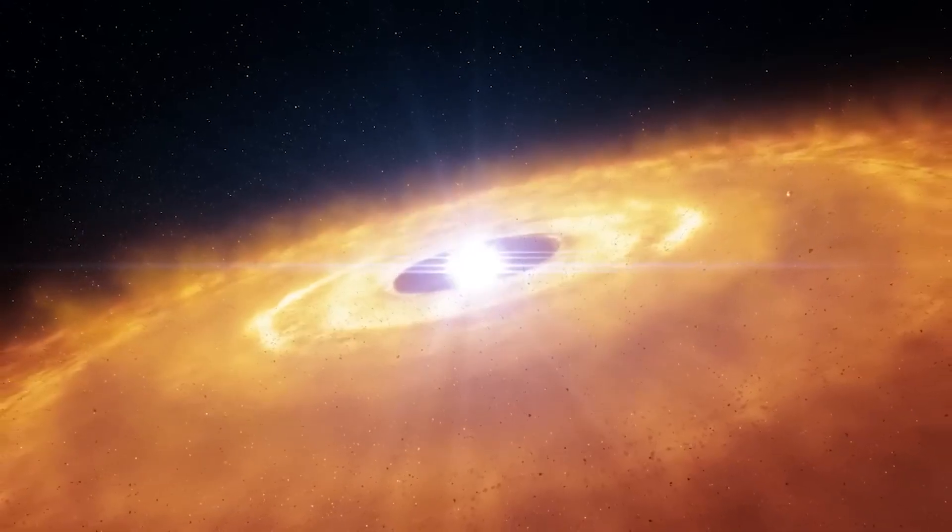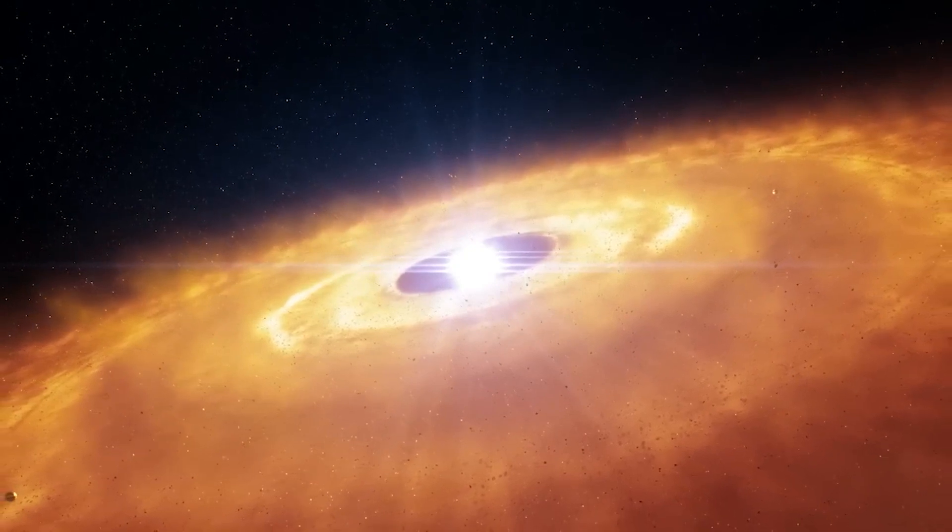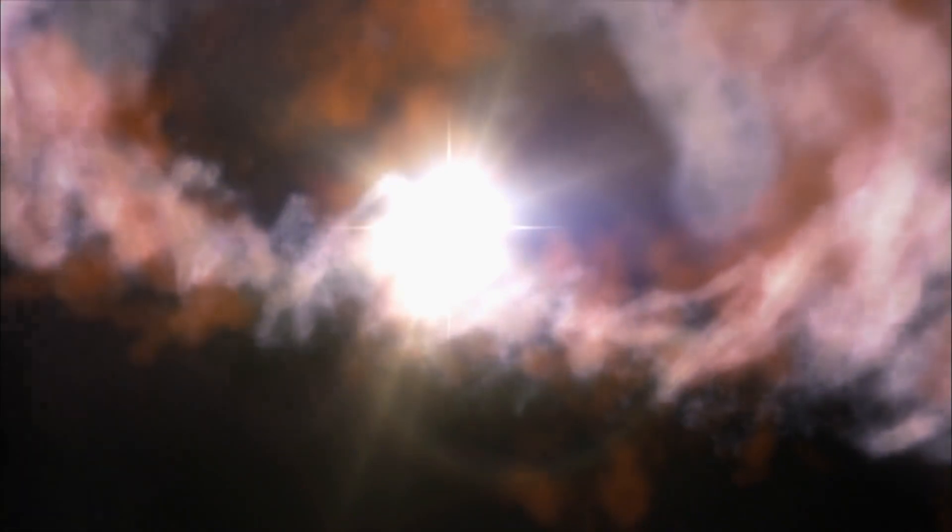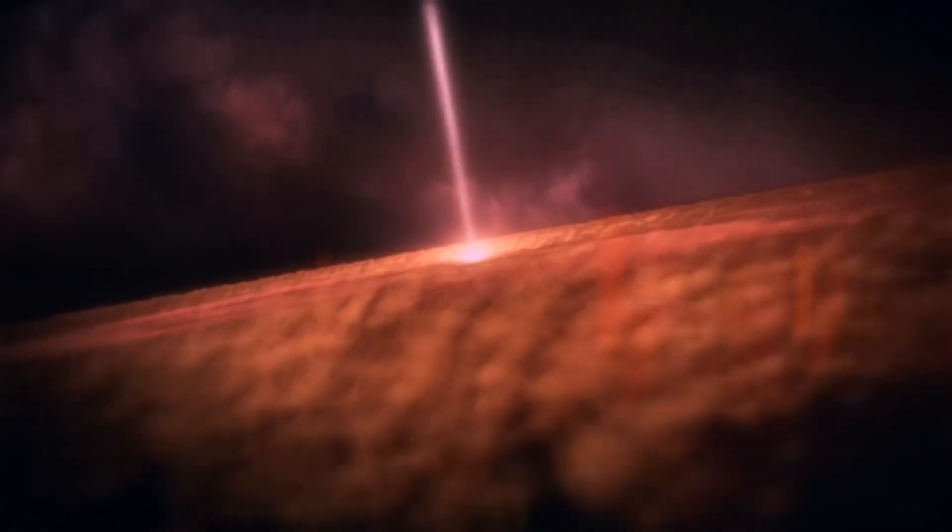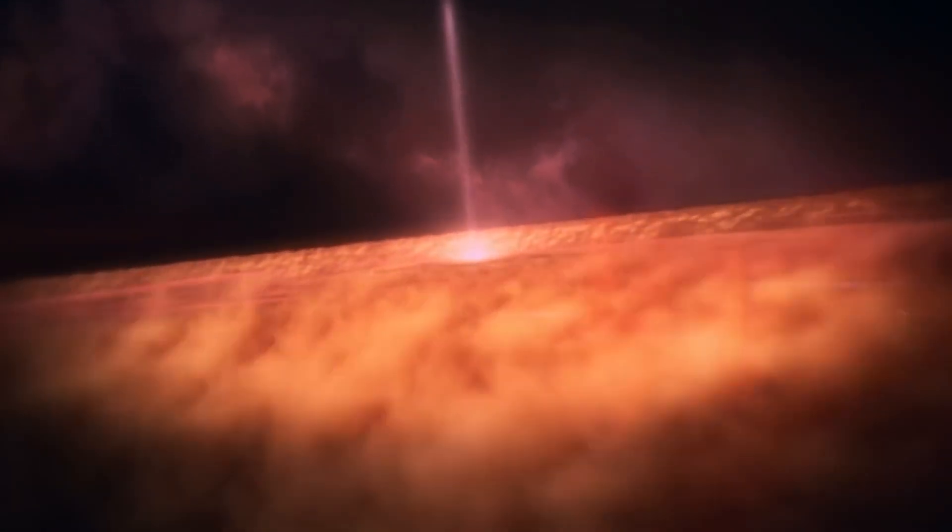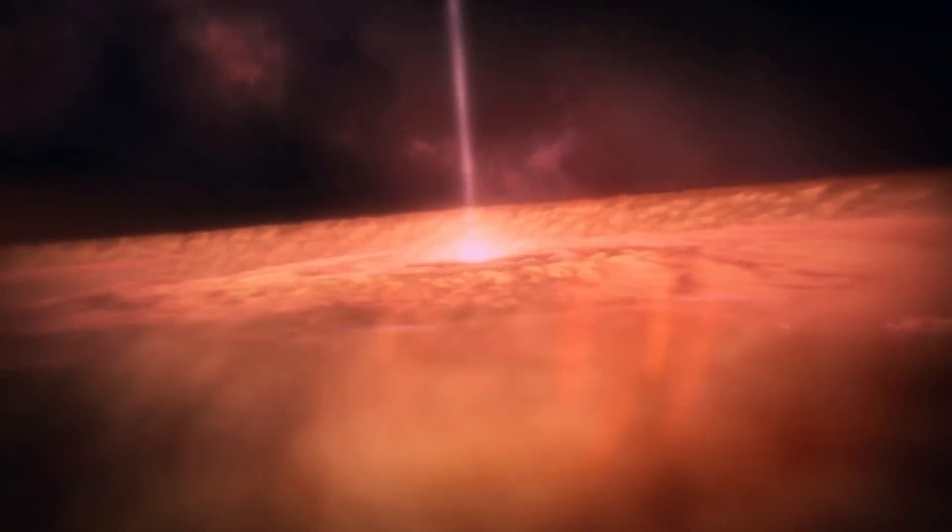The term protoplanetary disk itself suggests a dual structure consisting firstly of gas, and secondly of small solid particles, dust grains, with sizes typically around a tenth of a millimeter. From a chemical standpoint, protoplanetary disks are primarily composed of hydrogen and helium, the main components of cosmic gas clouds. However, they also contain other chemical elements, such as carbon, oxygen, nitrogen, aluminum, silicon, iron, and more.